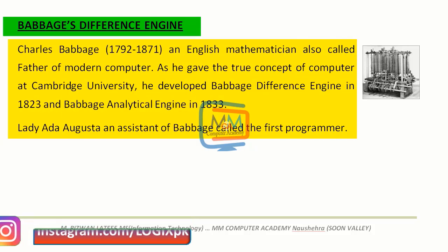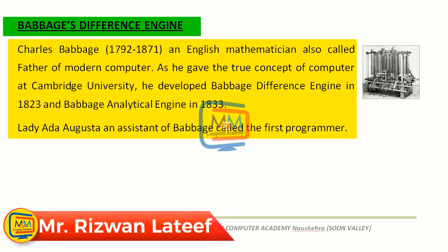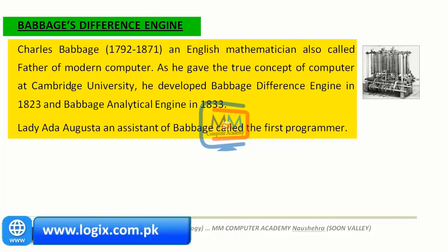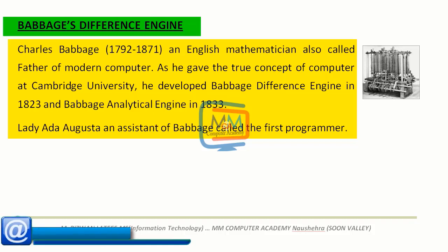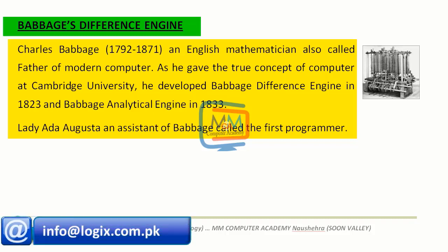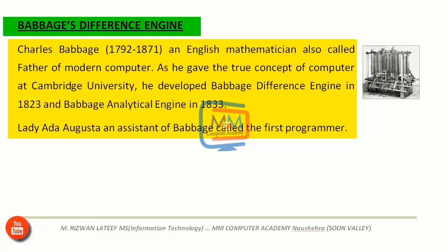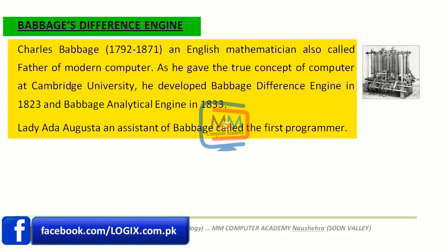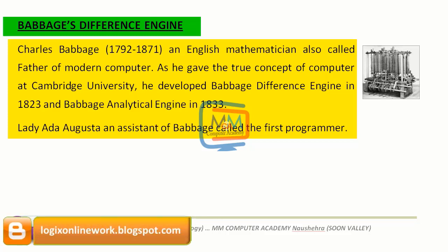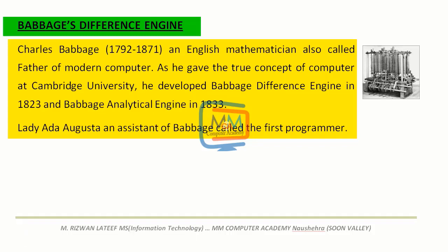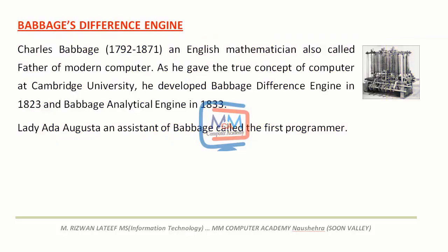Charles Babbage, 1792 to 1871, an English mathematician, is also called the father of modern computer as he gave the true concept of computer at Cambridge University. He developed the Babbage Difference Engine in 1823 and the Babbage Analytical Engine in 1833. Lady Ada Augusta, assistant of Babbage, is called the first programmer. The Analytical Engine was a better version of the Difference Engine, and Lady Ada Augusta was the programmer who is considered the world's first programmer.